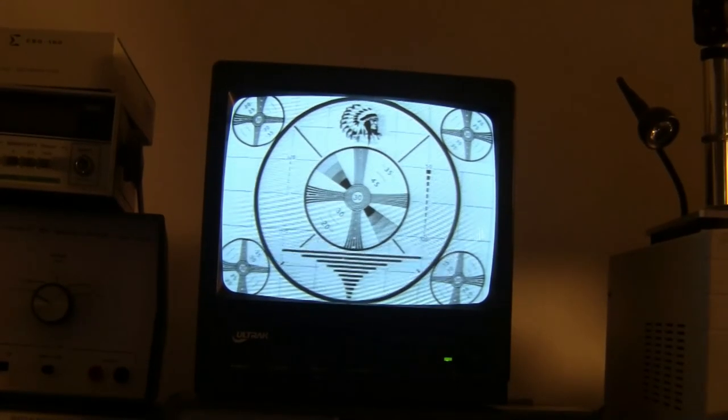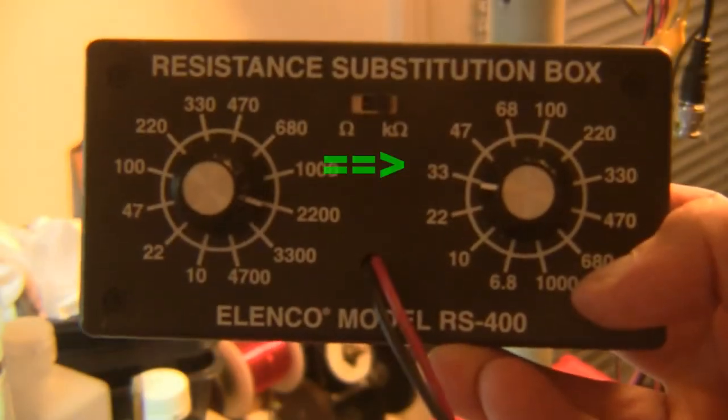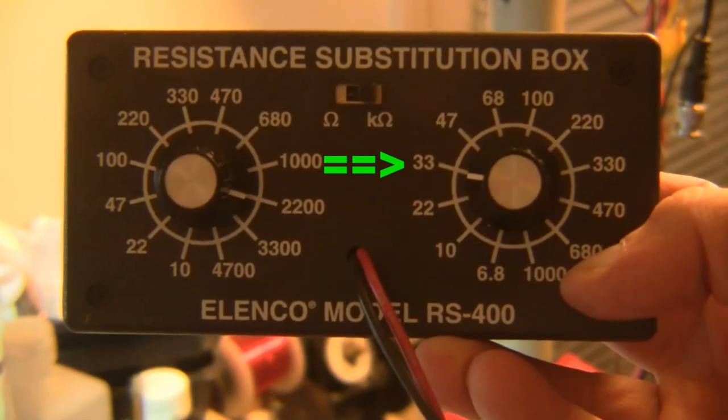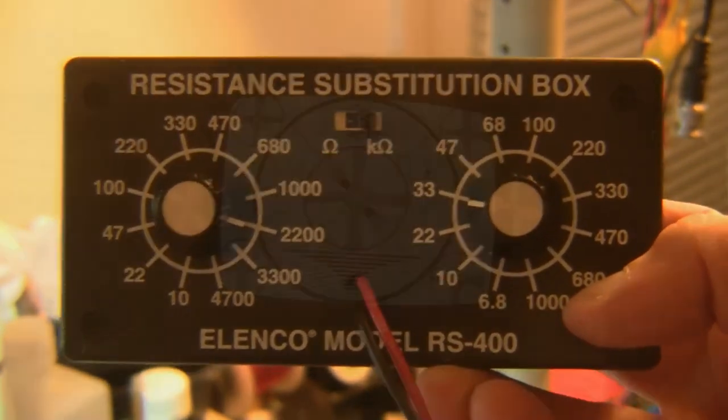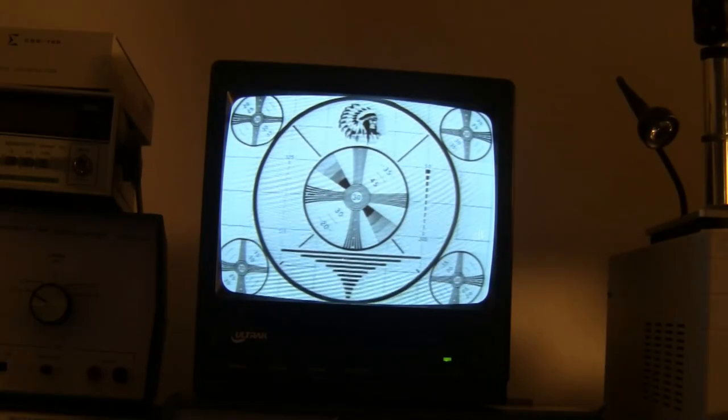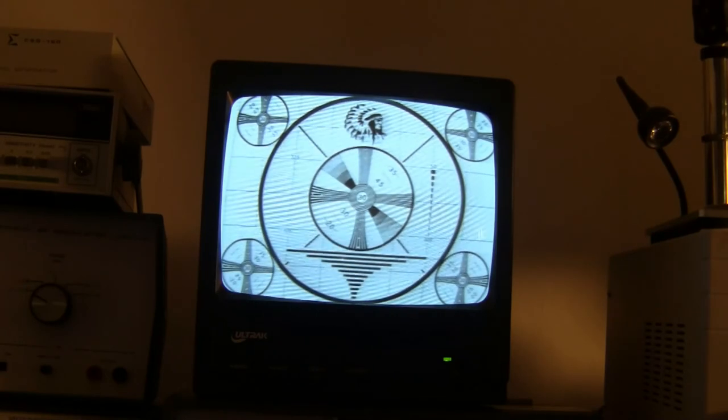Here we're looking at the picture on the monitor with the resistance substitution box set to the correct amount in parallel with the deflection yoke. Let's increase the resistance now to what it used to be, which was almost infinite. We'll go up to one megohm.